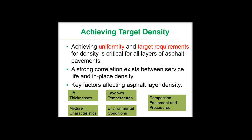Achieving target densities is one of the key construction quality measures that can have an impact on long-term pavement performance. Achieving not only the target requirements but also uniformity is critical for all layers of asphalt pavements. A strong correlation has already been shown between service life and in-place density. The key factors affecting asphalt layer density are lift thicknesses, laydown temperatures, mixture characteristics, environmental conditions, and compaction equipment and procedures.